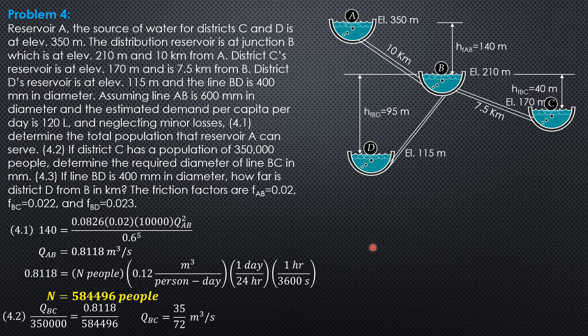Then, knowing that, we can determine the diameter of pipe BC required and substitute into head loss 40 equals 0.0826. Friction factor, 0.022 length, 7,500 meters or 7.5 kilometers. Discharge 35 over 72 square over diameter BC to the 5th. So, we can now compute the diameter of line BC. It is equal to 0.6042 meters.